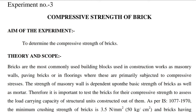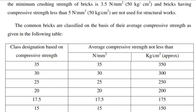As per IS 1077-1970, the minimum compressive strength of bricks is 3.5 N/mm² and bricks having compressive strength less than 5 N/mm² (50 kg per cm²) are not used for structural works. The common bricks are classified on the basis of their average compressive strength as given in the following table.